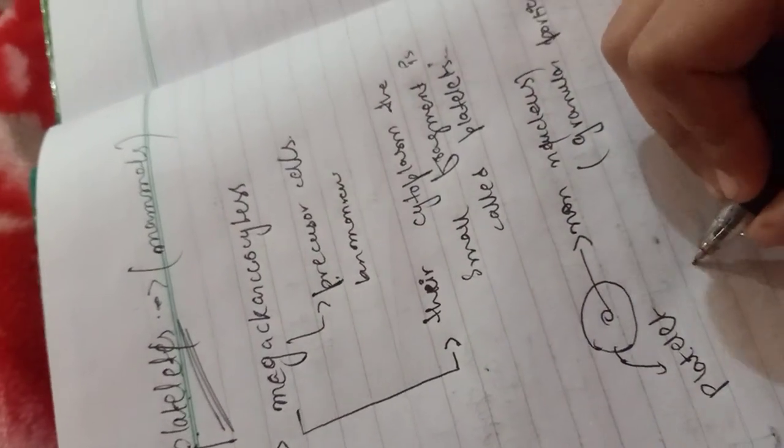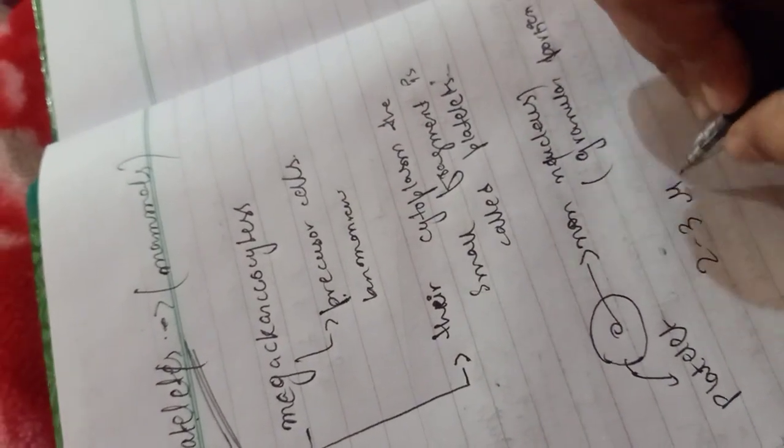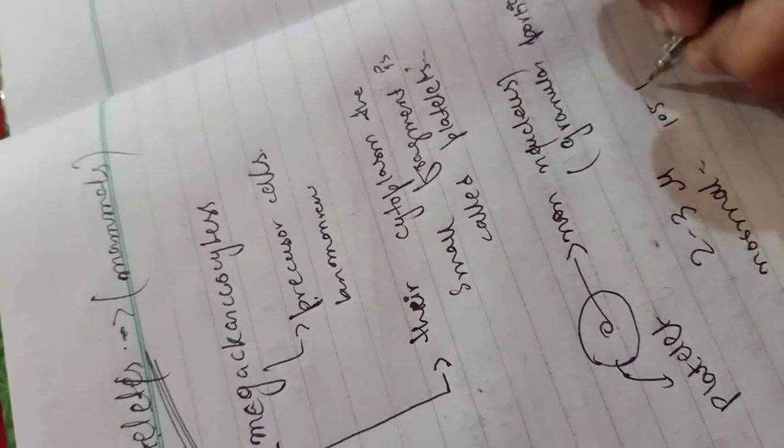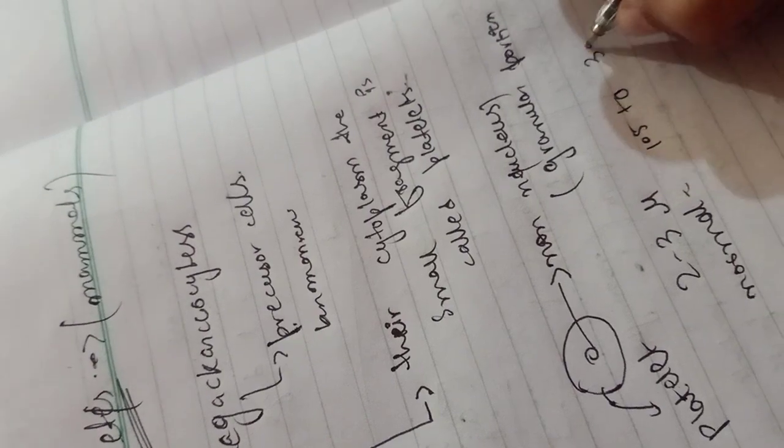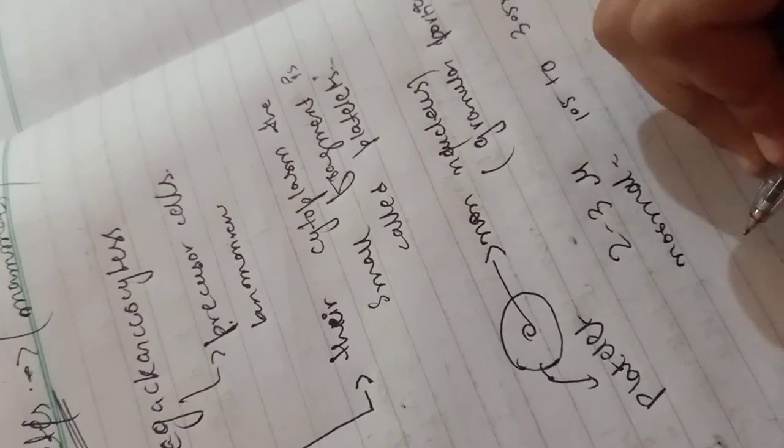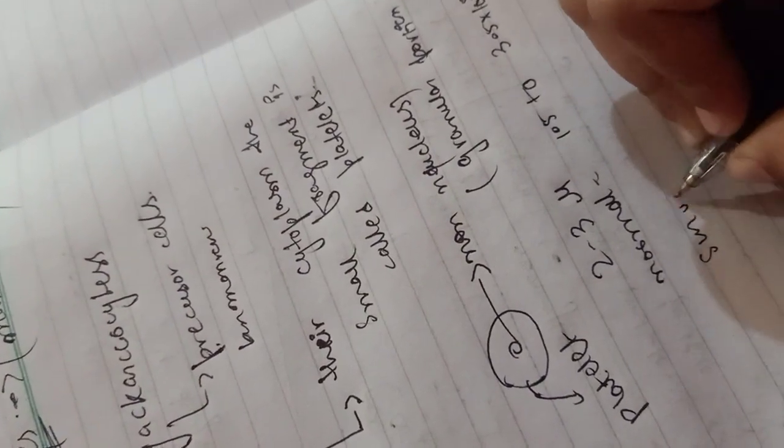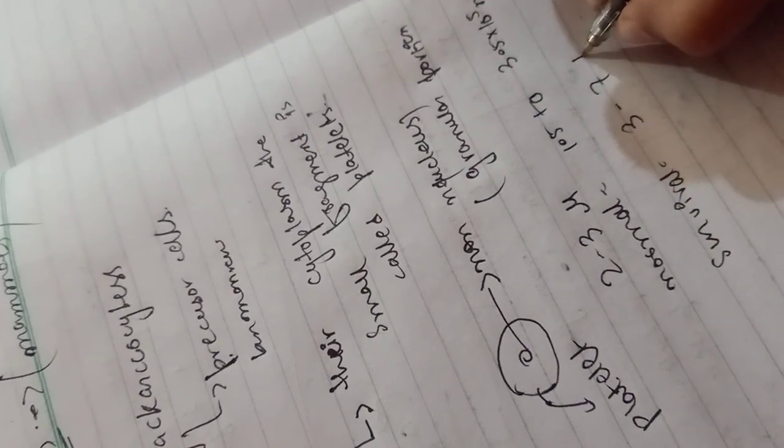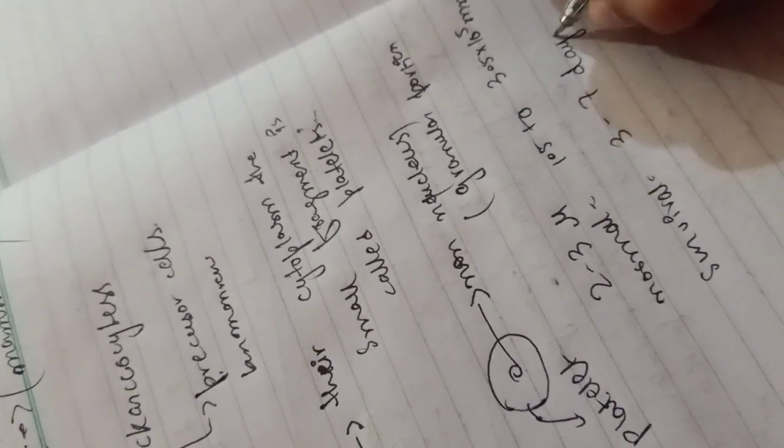If we talk about the size, that is 2 to 3 micrometers. The normal platelet count is 1.5 to 3.5 × 10^5 per microliter. The lifespan is 3 to 10 days.